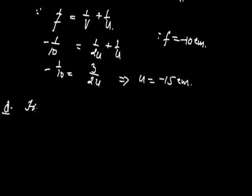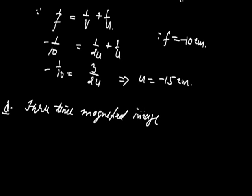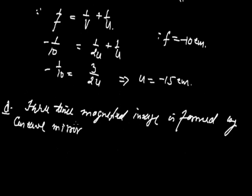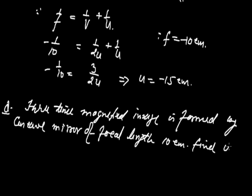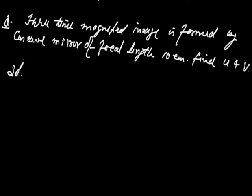Next question. A three-times magnified image is formed by a concave mirror of focal length 10 cm. Find U and V. In this question, it is not given whether the image is real or virtual, so there will be two cases.